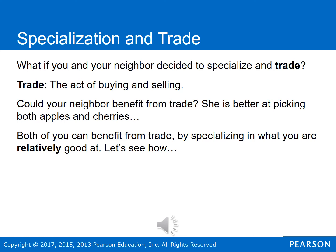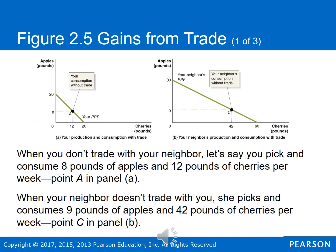Let's look at an example where you and your neighbor don't trade and you both pick a combination of apples and cherries. If you don't trade with your neighbor, let's say you consume eight pounds of apples and 12 pounds of cherries per week — that's point A on your production possibility frontier. When your neighbor doesn't trade with you, she picks and consumes nine pounds of apples and 42 pounds of cherries per week — that'll be point C on her production possibility frontier.